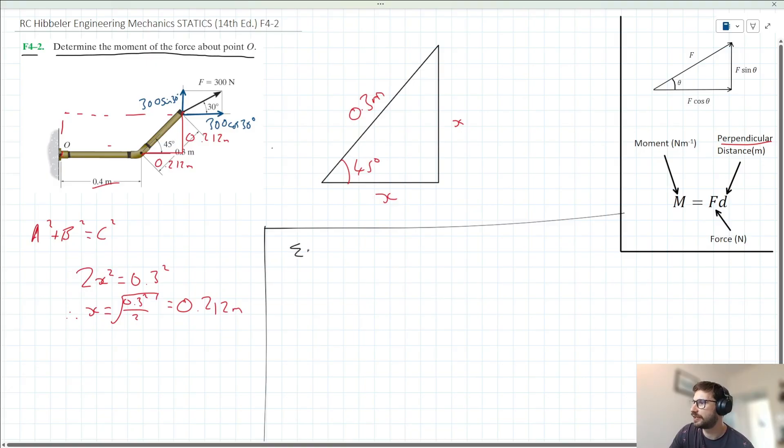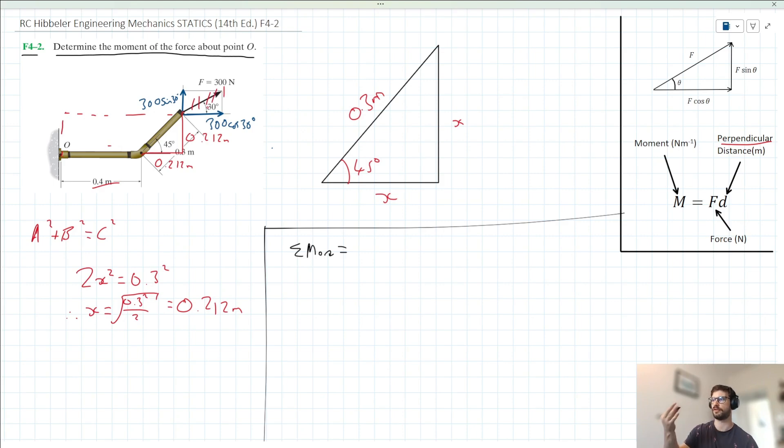We can say then that the sum of moments about O acting clockwise here is equal to... Okay, well, let's have a look. So let's consider moments that are acting clockwise first. Note we've kind of decomposed F into its horizontal and vertical components here, so we can kind of ignore the black arrow here and just consider the blue ones. So the only moment acting clockwise here will be the horizontal component of F, this 300 cos 30.